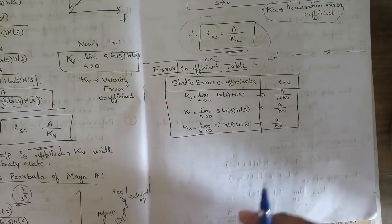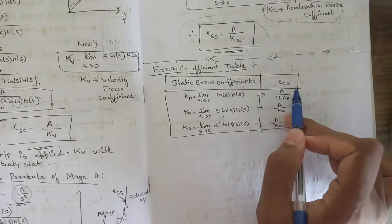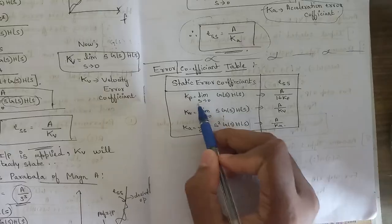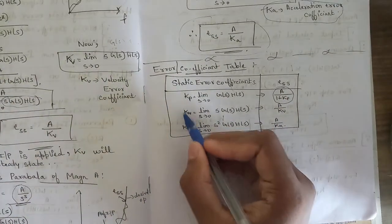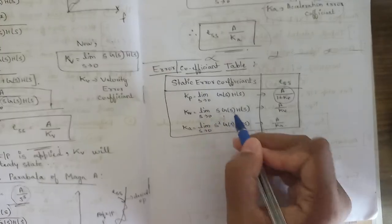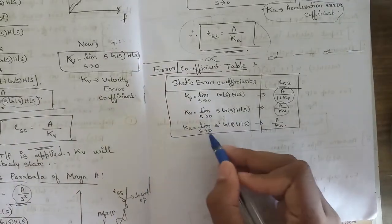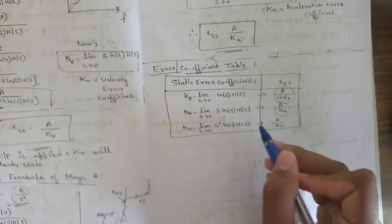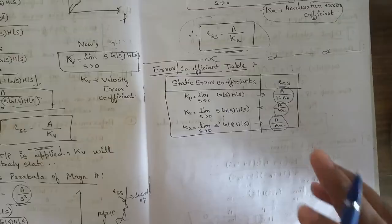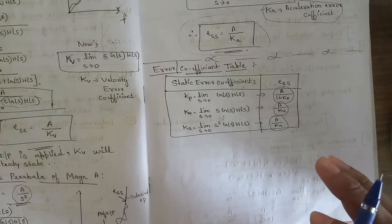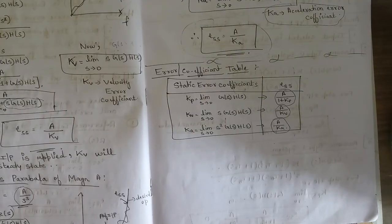To summarize all these formulas in an error coefficient table: Kp = limit s→0 G(s)·H(s), with e_ss = A/(1+Kp) for step input. Kv = limit s→0 s·G(s)·H(s), with e_ss = A/Kv for ramp input. Ka = limit s→0 s²·G(s)·H(s), with e_ss = A/Ka for parabolic input. Please go through this table thoroughly as these formulas are used in many problems. In the next class, we will continue with more theory and solve problems.